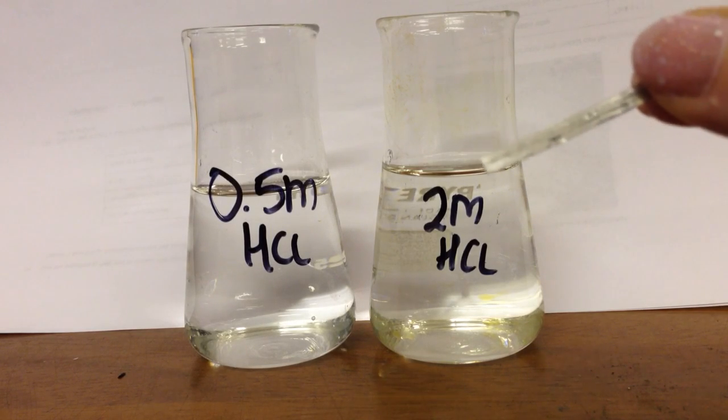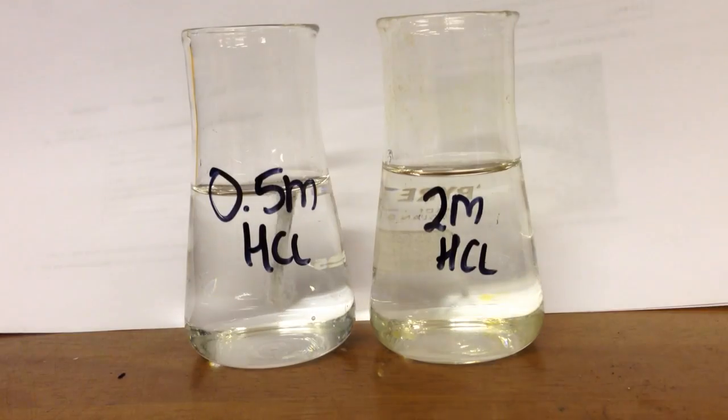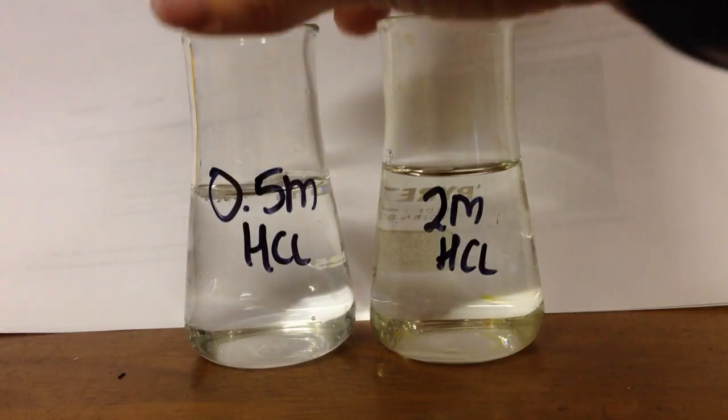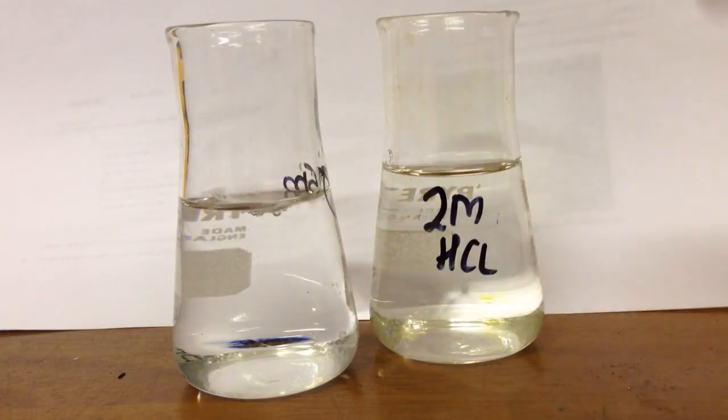So I'm just going to put the magnesium ribbon into the 0.5 molar hydrochloric acid first of all. And you can see, if I just turn that around, that we have bubbles coming at the top here. If I just bring that a bit closer, you can see the magnesium has fallen to the bottom, and it is bubbling away here.